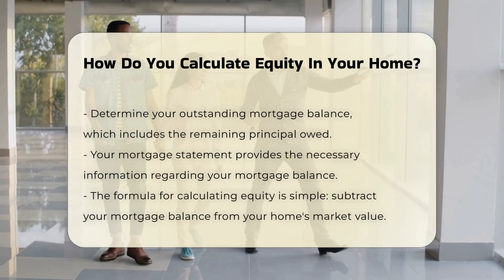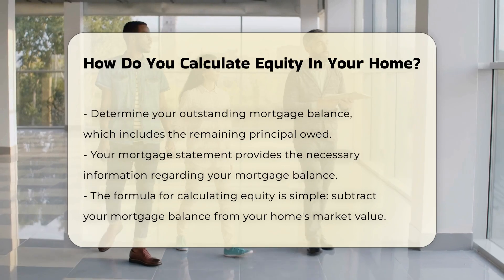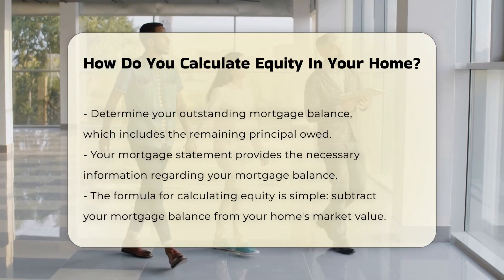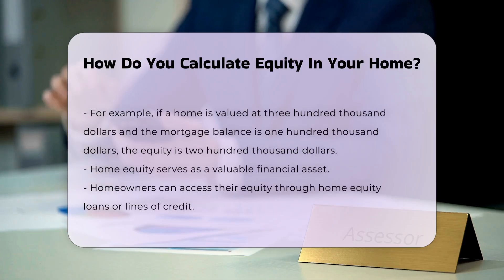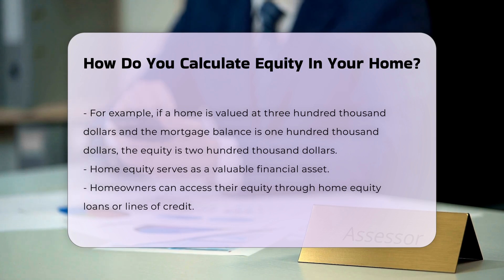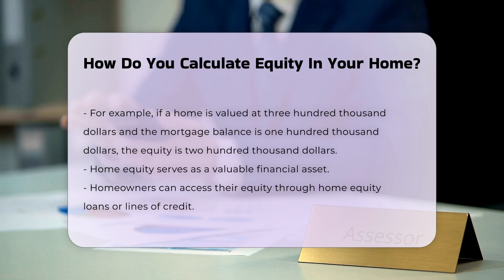The formula to calculate equity is straightforward: subtract your mortgage balance from your home's market value. The resulting figure represents your home equity. For example, if your home is valued at $300,000 and you owe $100,000 on your mortgage, your equity is $200,000.